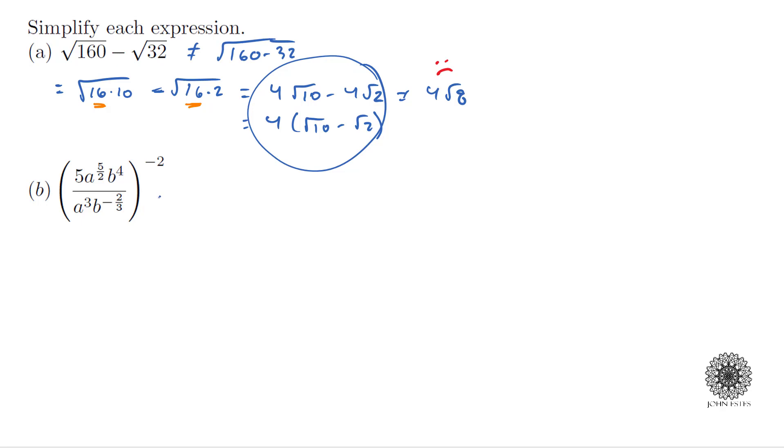So I think what I would do is instead of having this big fraction, let's get everything together on one line. What I mean by that is here I'm going to have 5a to the 5 halves power, and I'm going to bring this a into the numerator, and I can do that by making it a negative exponent. That's a to the negative 3 power.